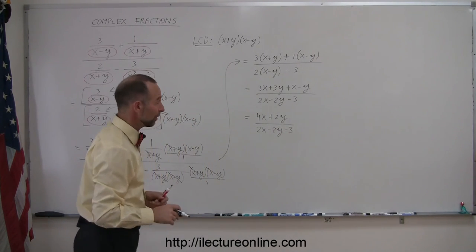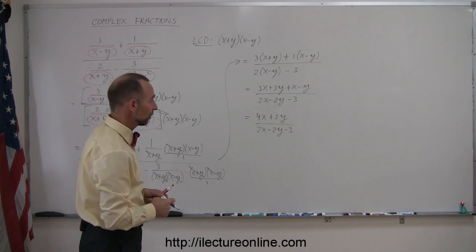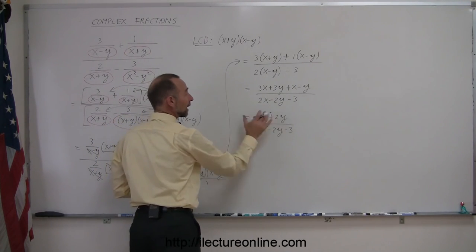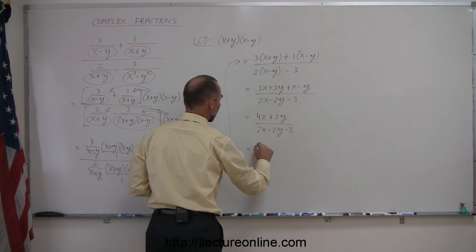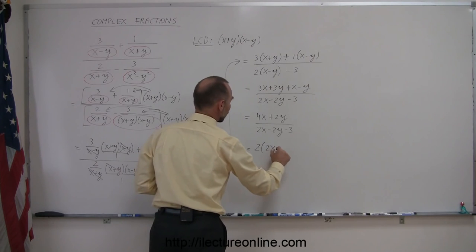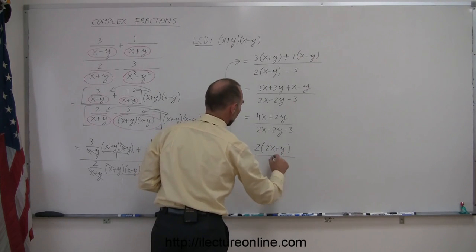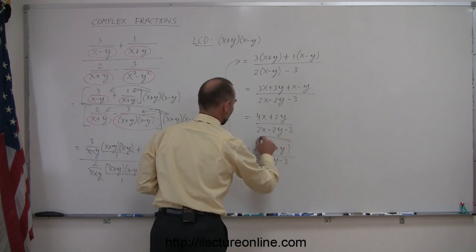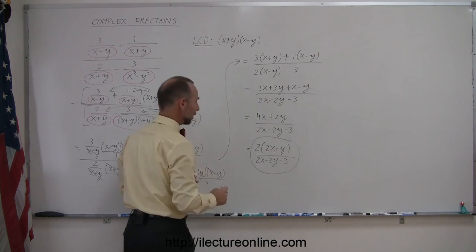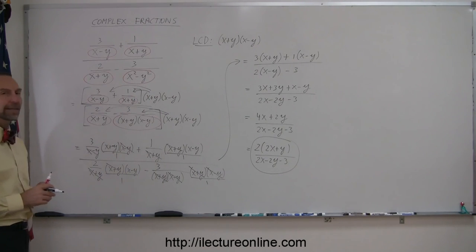And then, to be absolutely completely correct, the most simplest form would be to factor out a 2 from the numerator, so this can be written as 2 times 2x plus y divided by 2x minus 2y minus 3, and that would be the final length, or the most simplified form of that ugly-looking complex fraction.